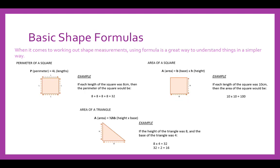Basic shape formulas. When it comes to working out shape measurements, using formula is a great way to understand things in a simpler way. Here we've got perimeter of a square. P for perimeter equals 4 times L, which is the length. In order to work out the perimeter, you would add all of the sides of the shape: L plus L plus L plus L. If each length of the square was 8 centimetres, then the perimeter of this square would be 8 plus 8 plus 8 plus 8, which would give you 32.